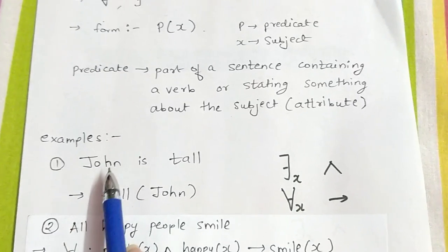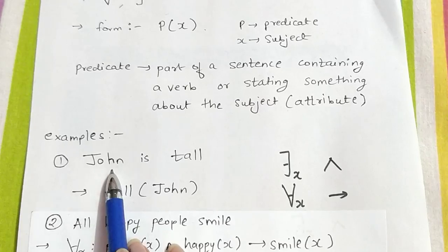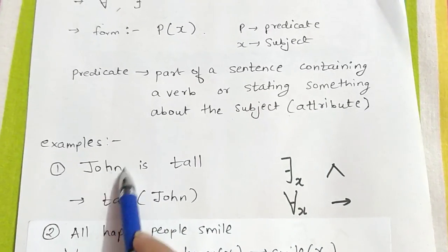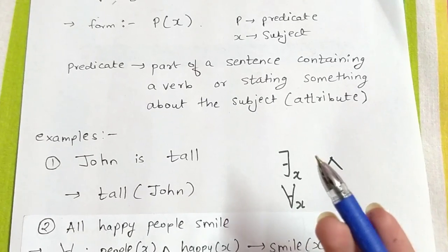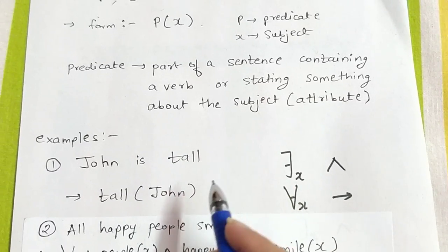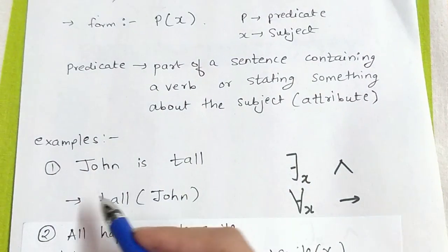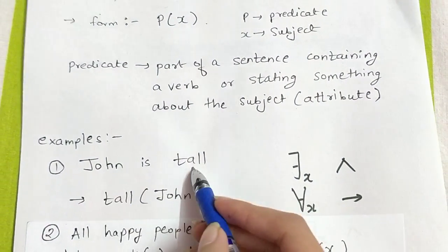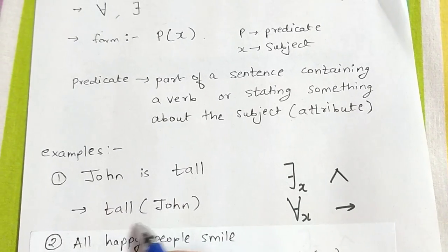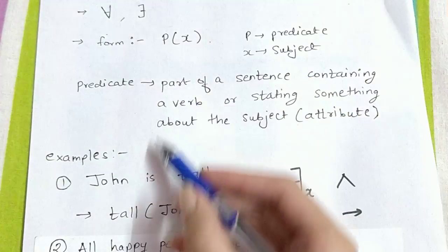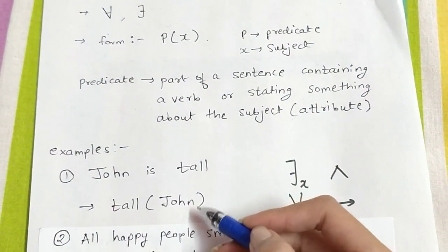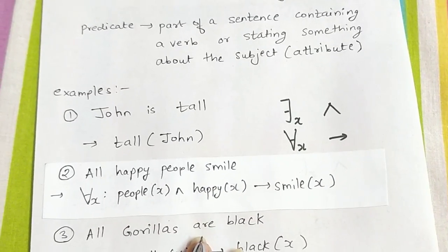For example, John is tall. John is going to be our subject, the main person. An attribute, that is something that states about a subject, is tall. So tall(John). Isn't this the same form as P(X), where tall is our predicate and John is our subject? Let's see some more examples.